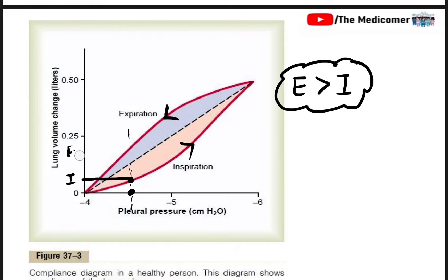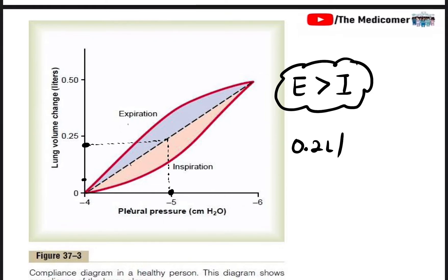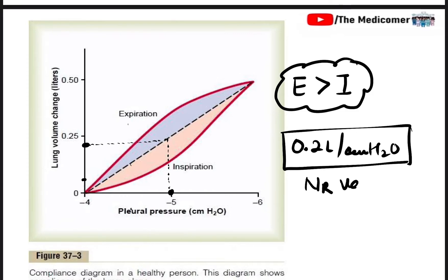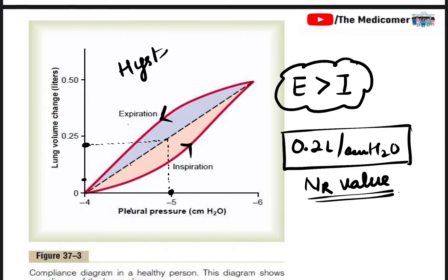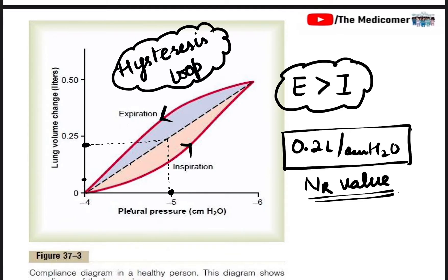The normal intrapleural pressure is around 5.5 cmH₂O. Taking the average of both inspiration and expiration values, the normal compliance is about 0.2 liters per centimeter of water pressure. The curve formed by the inspiration and expiration paths is called a hysteresis loop because it forms a closed loop.